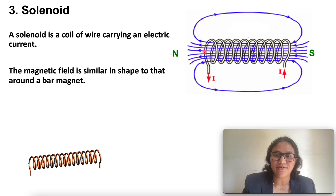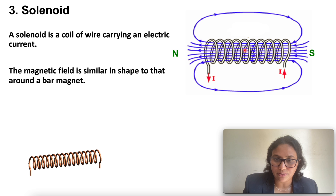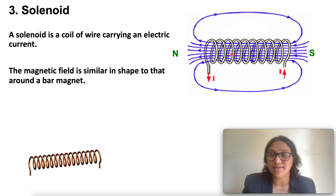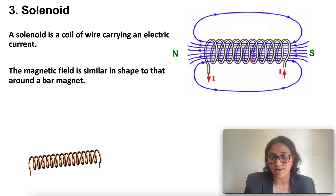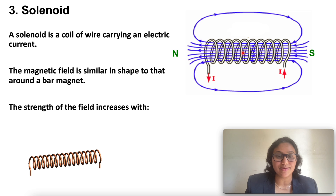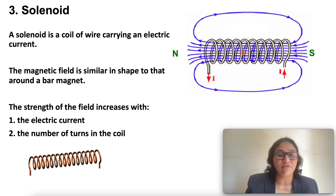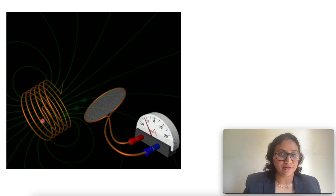One end of the solenoid behaves as a magnetic north pole while the other behaves as a south pole. The field lines inside the solenoid are in the form of parallel straight lines. A strong magnetic field produced inside a solenoid can be used to magnetize a piece of magnetic material like soft iron placed inside the coil — the magnet so formed is called an electromagnet. The strength of the field increases with the electric current and the number of turns in the coil.